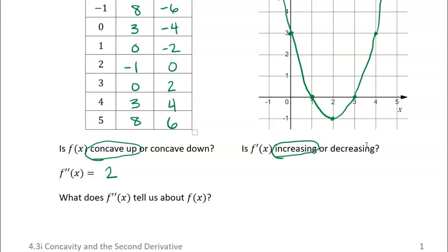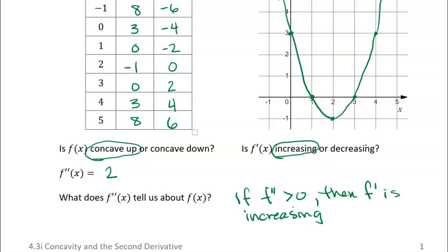So what does the second derivative tell us about f of x? In general, if f double prime of x is greater than zero, then f prime is increasing, and so f is concave up. The second derivative is telling us about the concavity of the function.